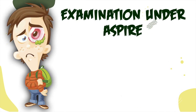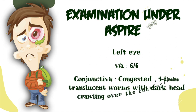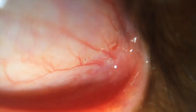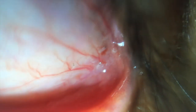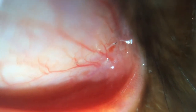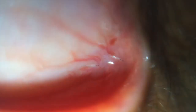Examination under ASPIRE: the patient's left eye with visual acuity of 6/6. The conjunctiva looked congested with 1–2 mm translucent worms with dark heads crawling all over the conjunctiva. This is the video showing examination under ASPIRE — to be noted, it is done without a slit lamp.